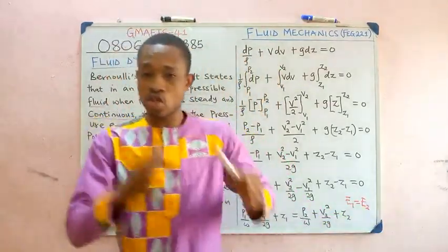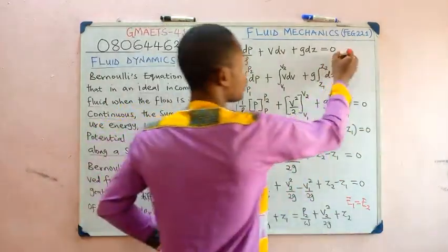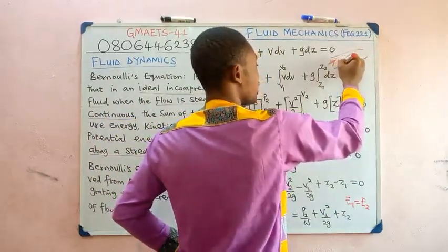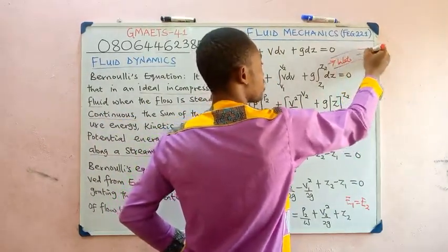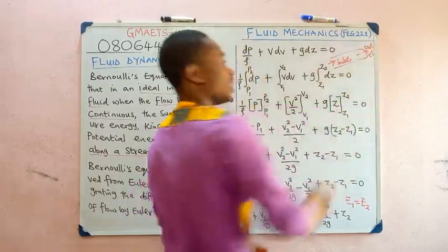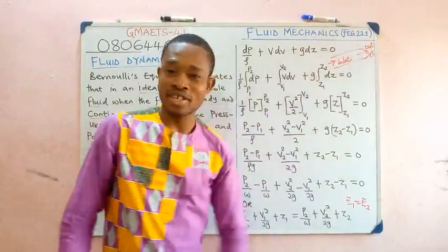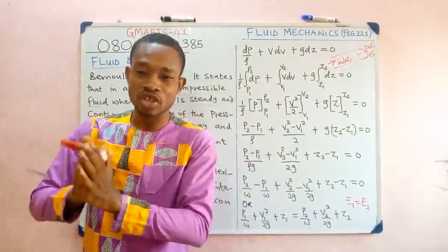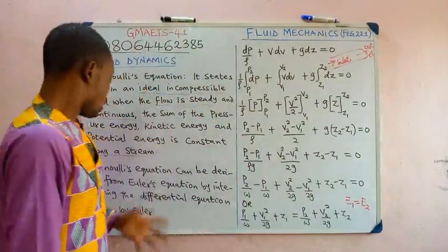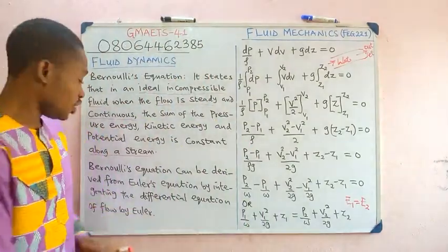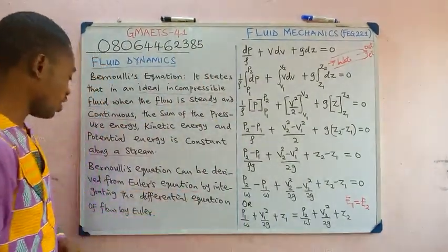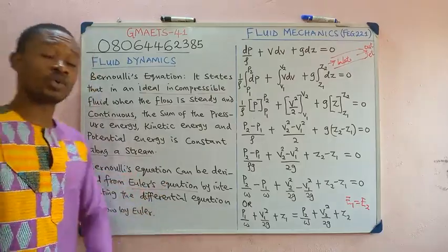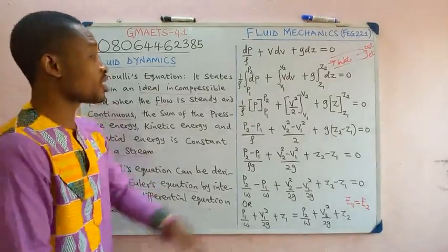This is much like inlet energy equal to outlet energy in a pipe, where section 1 is the inlet and section 2 is the outlet. In deriving Bernoulli's equation, we can rely on Euler's equation of fluid flow, which is a differential equation: dp/ρ + VdV + gdZ = 0.